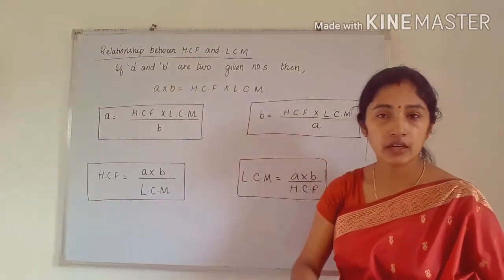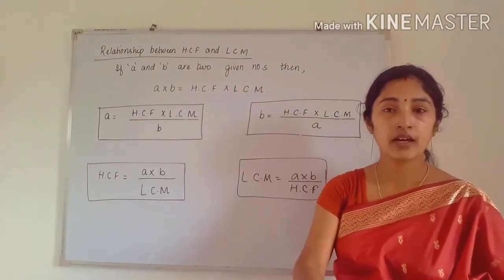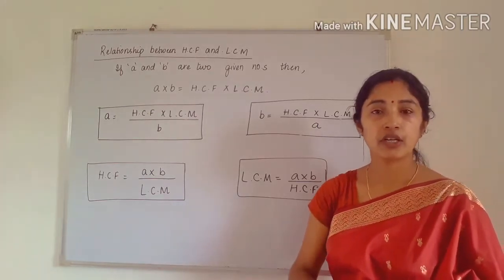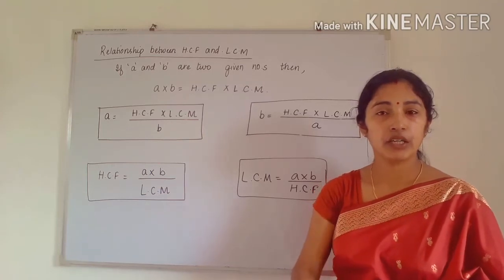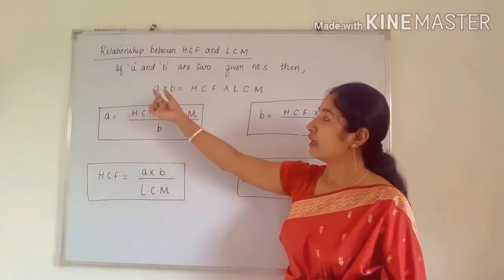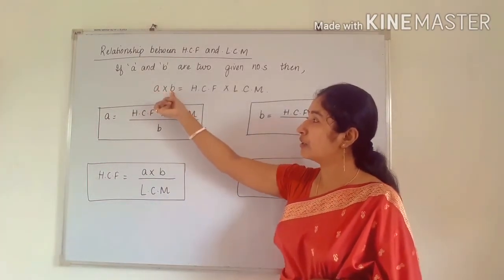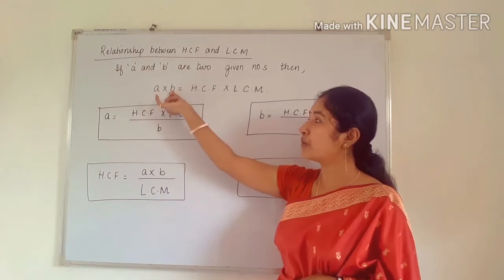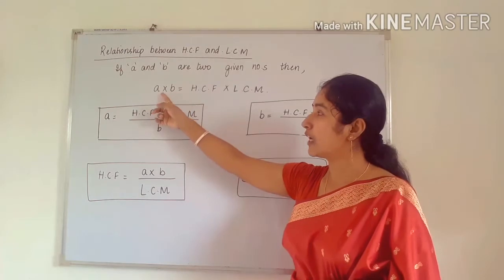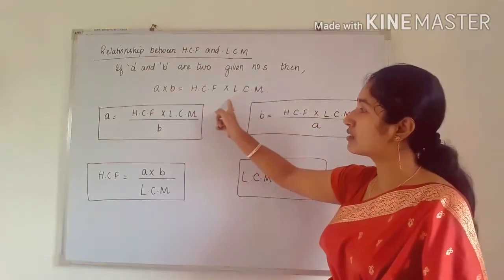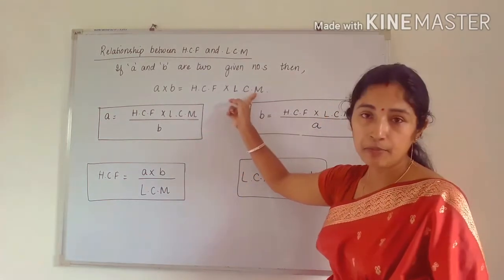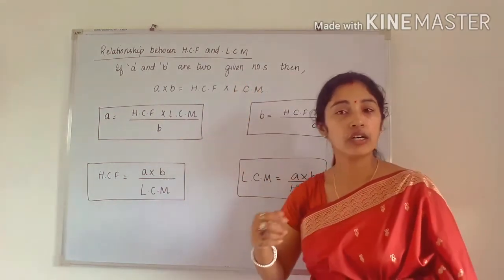You will study this further in your next class — there is a chapter on algebraic expressions and algebraic equations. For now, understand that if any number is multiplied with another and you transfer one number to the other side, it gets divided. For example, B is multiplied with A, so when you transfer B to the other side, it divides HCF × LCM.